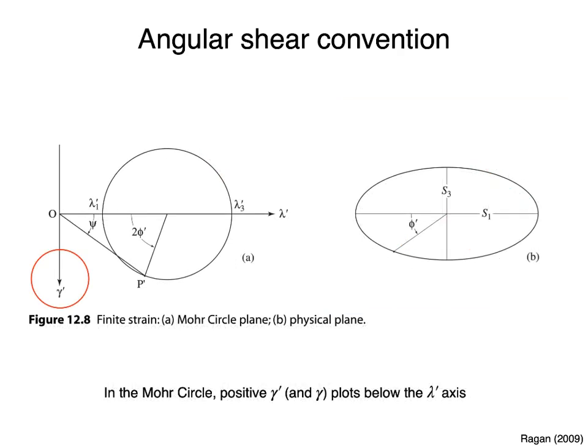A second convention is that in the Mohr Circle, positive values of angular shear and shear strain will plot below the horizontal axis, and negative values above the horizontal axis. This facilitates comparing the strain ellipse and the Mohr Circle. For example, a line in the third quadrant of the strain ellipse making an angle phi prime from S1 will make an angle 2 times phi prime from lambda prime 1 in the Mohr Circle. Since this line is in the third quadrant of the strain ellipse, it experienced positive angular shear, and therefore it will plot below the horizontal axis in the Mohr Circle.